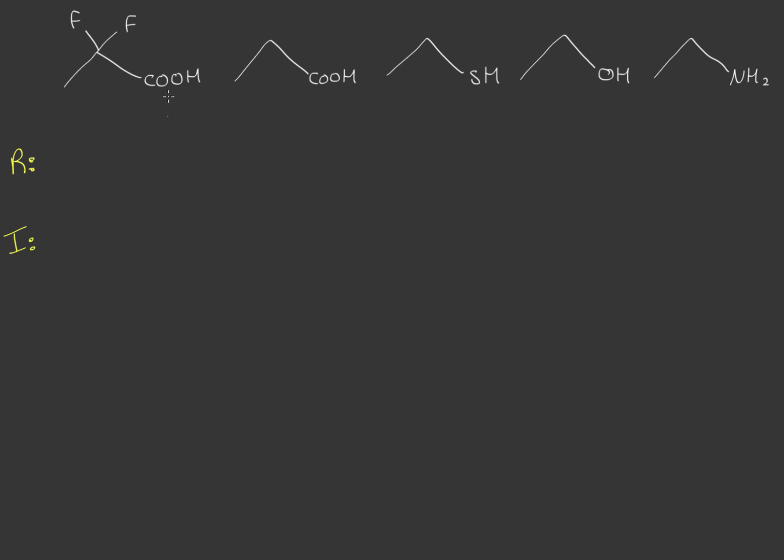If we were to look at this carboxyl group with two fluorides next to it, we have another carboxyl group with nothing next to it, we have a sulfur with a hydrogen and a hydroxyl group, and then we have an NH2 amine.